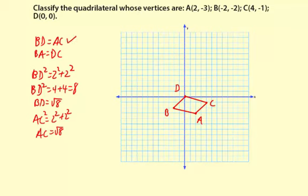Also, BA is going to have to equal DC. So let's check BA. BA squared is going to be, so we have 1 down and then it's 4 over for that triangle. So it's going to be 1 squared plus 4 squared equals 1 plus 16 equals 17. So BA equals square root of 17.